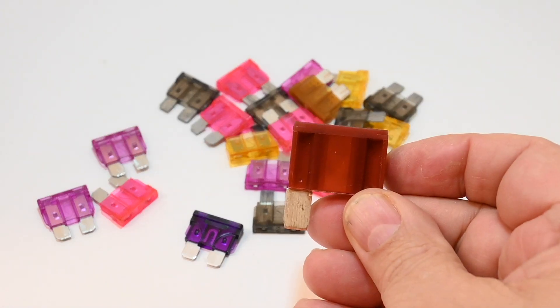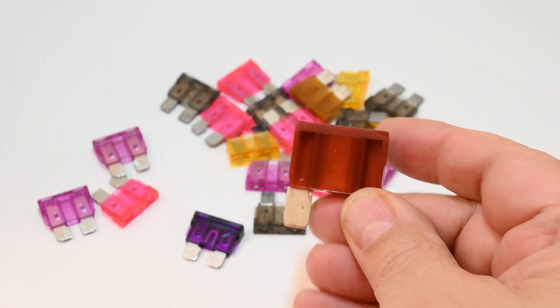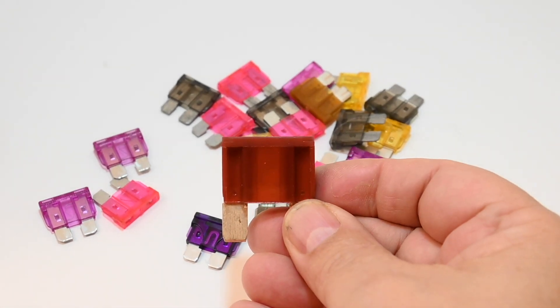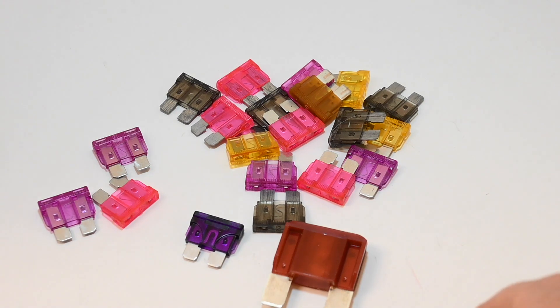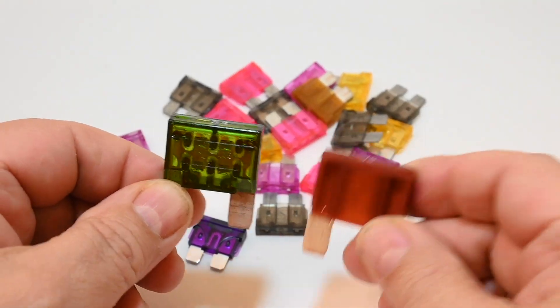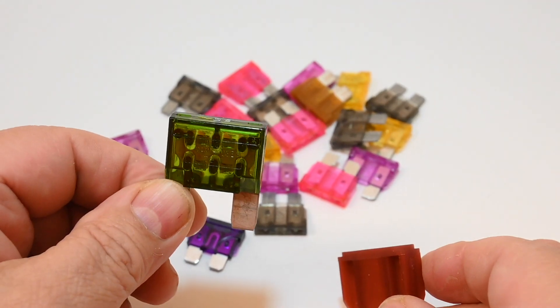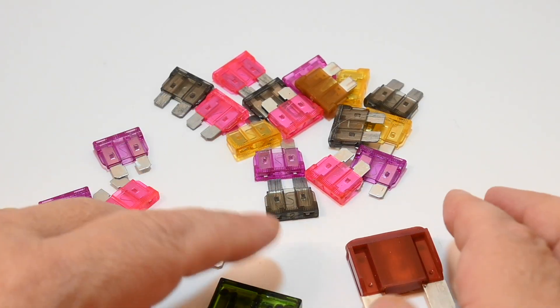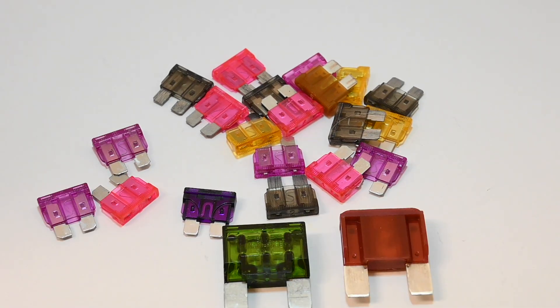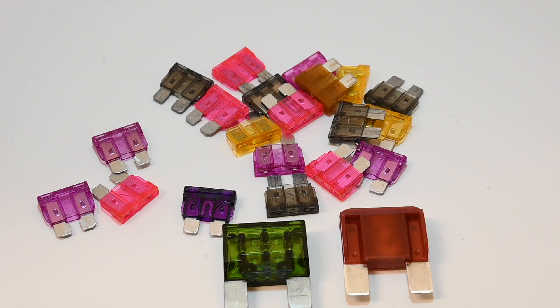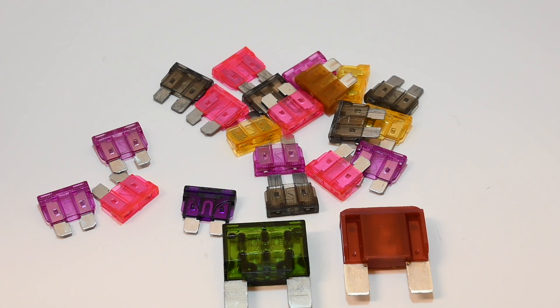But then we have a Littlefuse maxi fuse that is also 35 amps, and they actually call this brown. And here is a Bussman 35 amp fuse, identical to this one, although this one is green. So while the ATO-ATC fuses generally follow the color code, other fuses may not. My recommendation is always look at the stamping on the fuse to make sure you're replacing it with the right fuse.